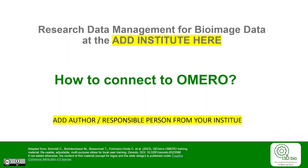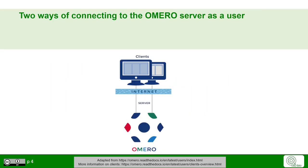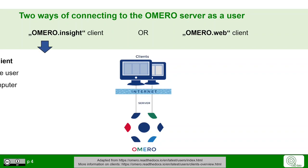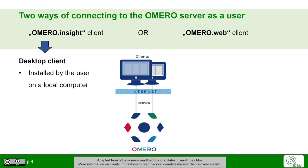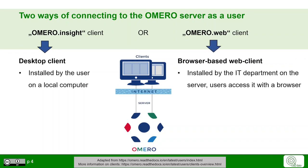How to connect to Omero. As a user, there are typically two ways to connect to Omero's server. One is the OmeroInsight client, the other is the OmeroWeb client. The OmeroInsight client is a desktop client installed by the user on a local computer, while the OmeroWeb client is a browser-based client that is already installed by the IT department or facility who has installed the server.